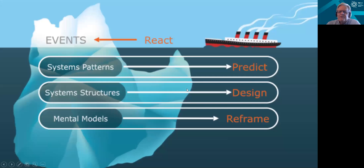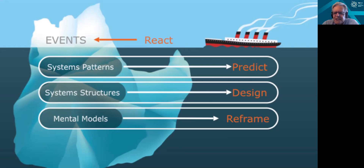We want to get away from reacting to events — as we're doing with the pandemic right now. With systems thinking, we should have been much better at seeing the patterns that were coming, predicting things, understanding the problems with our overall systems and structures, so we could design things better and actually reframe our mental models to be in a much better position to deal with the challenges, threats, and changes that are constantly coming when it comes to health systems.